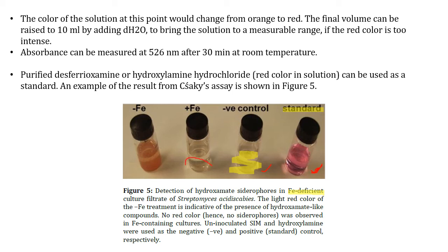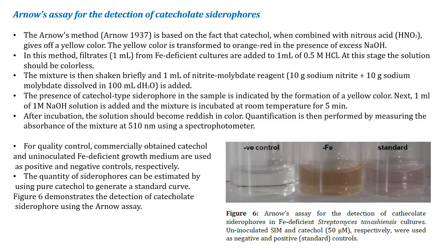This was about Saki's assay. Now moving to Arnow's assay for detection of catecholate-type siderophores. It is based on the fact that catechol combined with nitrous acid (HNO₂) gives a yellow color, which transforms to orange-red in the presence of excess NaOH. In this method, 1 ml filtrates from iron-deficient culture are added to 1 ml of 0.5 M HCl — at this stage the solution should be colorless.